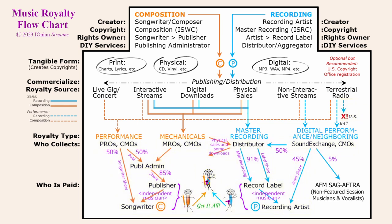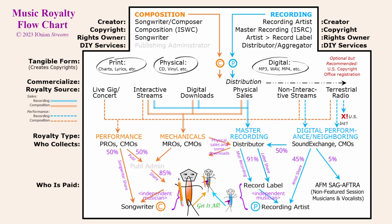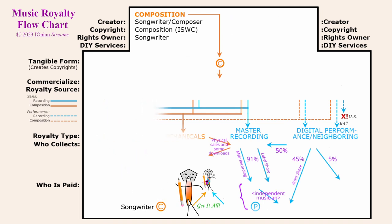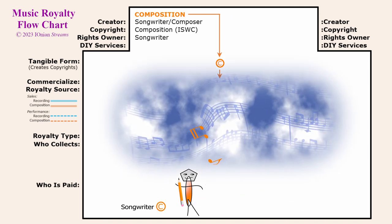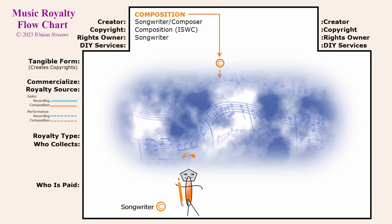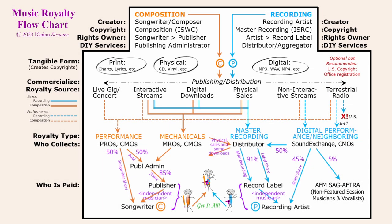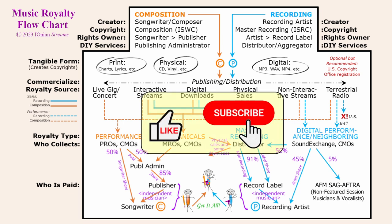Last but not least, it must be appreciated that the composer-songwriter is the one indispensable role here. No one else has a role — not the publishing company or administrator, not the record label, not the PRO, MRO, CMO, or the distributor, or SoundExchange, not the DSPs, or the radio stations, not the clubs and concert promoters, not even the recording artists. Truly, no one has a purpose unless the composer-songwriter creates some music first. So there you have it — a music royalty flowchart. I hope it helps you, the independent musician, earn all the royalties you deserve and are owed.